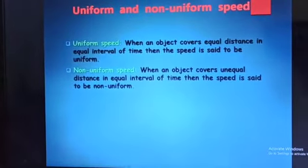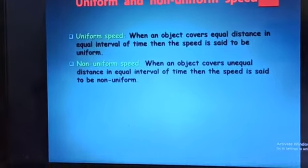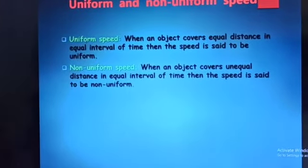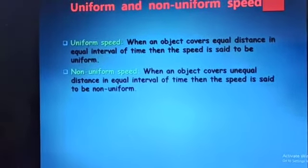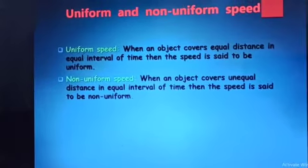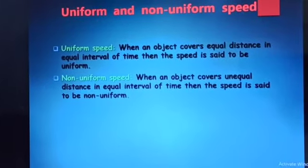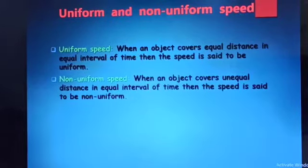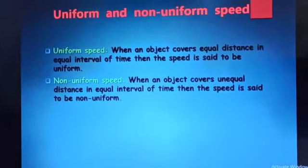Uniform and non-uniform speed: when an object covers equal distances in equal intervals of time, then the speed is said to be uniform.